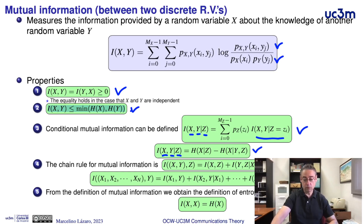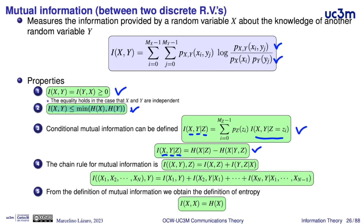It is also possible to introduce the mutual information for more than two random variables, and it is based on the chain rule. For the basic definition of the mutual information between three random variables x, y, and z, we have the mutual information between x and z, plus the mutual information between y and z given x.